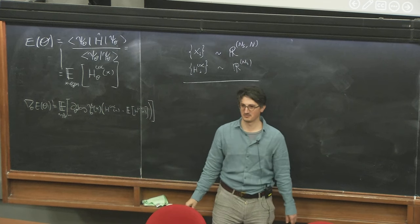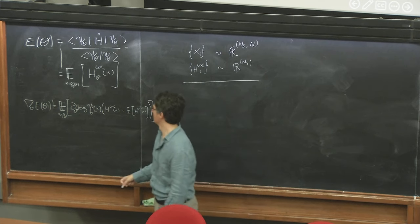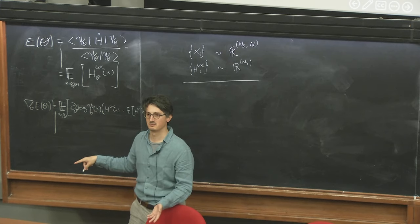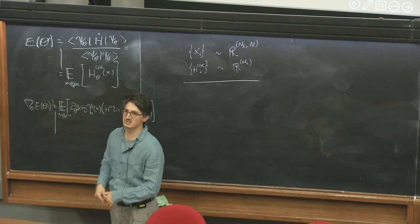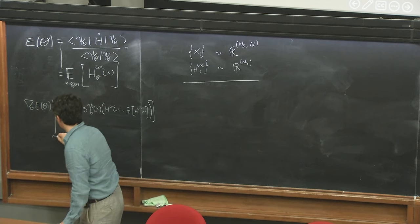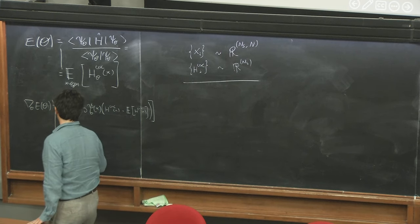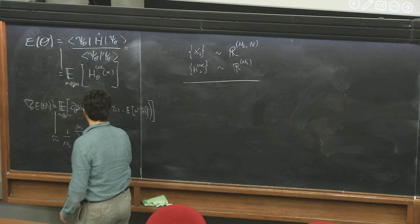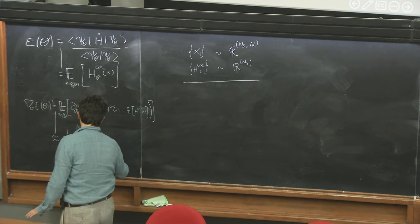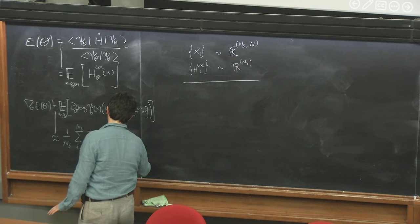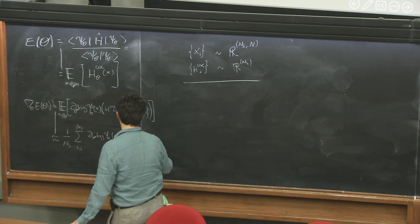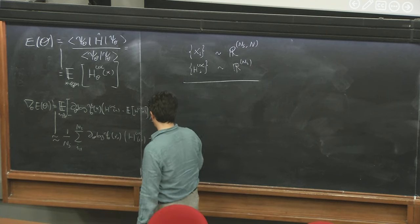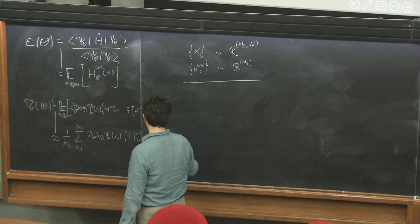How do we compute this gradient? Here I have H_loc of X. This is an expectation value, so I can take the sample mean like before. I will approximate it with one over number of samples, sum over i from one to number of samples, of d_theta_star log psi_theta(X_i) times H_loc(X_i) minus this expectation value, which I approximate with a mean of H_loc.